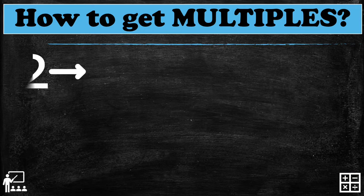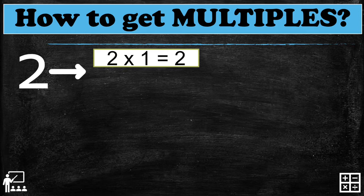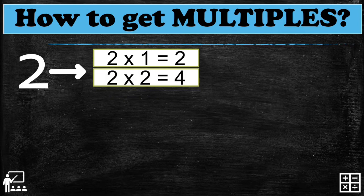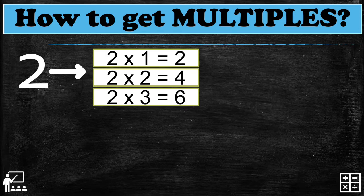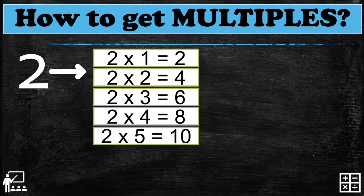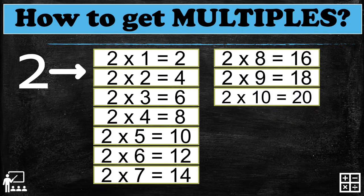Now I have the number two. Just like with number one, we multiply two by another number from one to ten. So: two times one equals two, two times two equals four, two times three equals six, two times four equals eight, two times five equals ten, and so on up to two times ten.